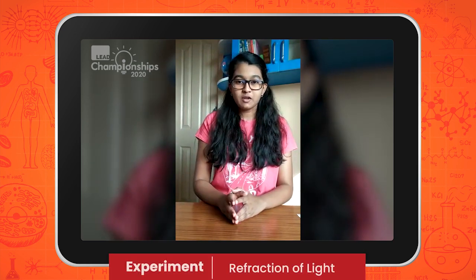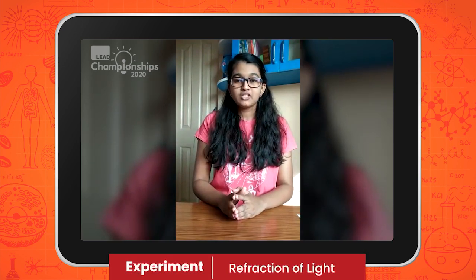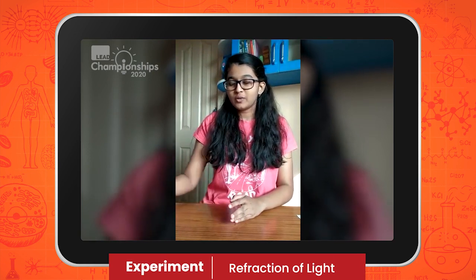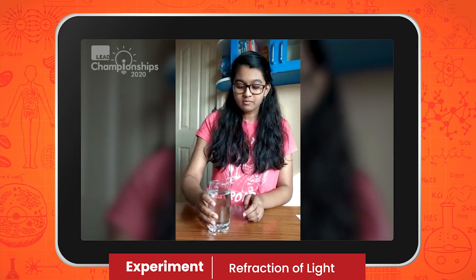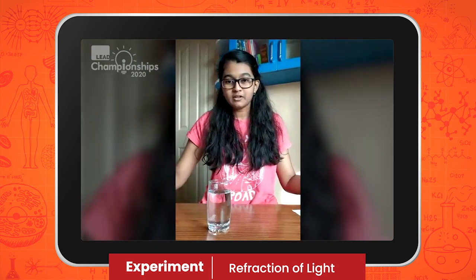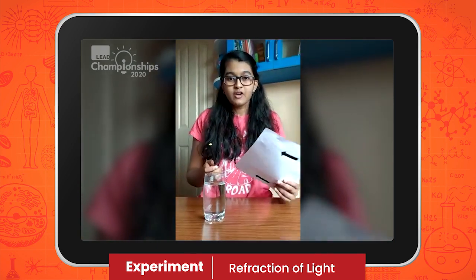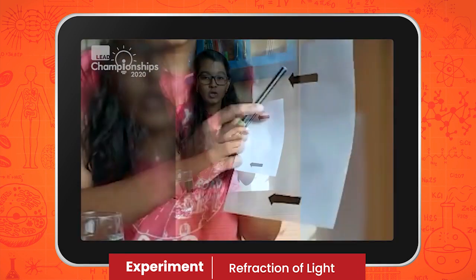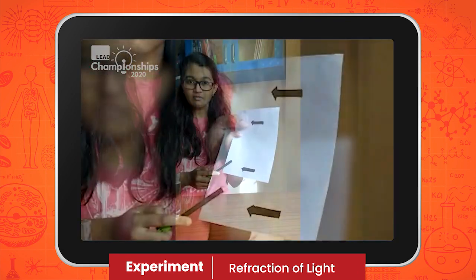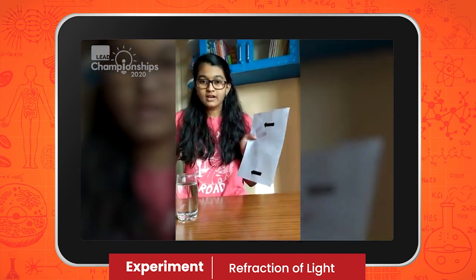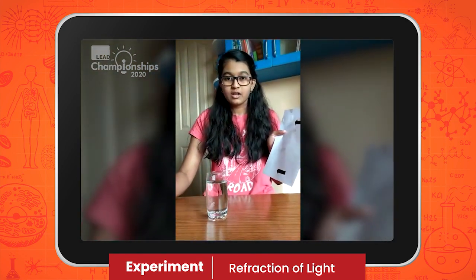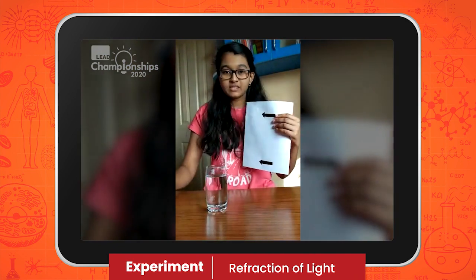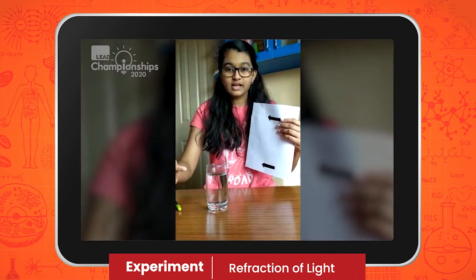Now let us conduct an experiment based on refraction of light. For this experiment, you will need a glass of water, a sheet of paper, and a pen. First, take a sheet of paper and draw two arrows on it facing the same direction. Then take a glass of water. Now, what do you think will happen when we see this sheet of paper through this glass of water?